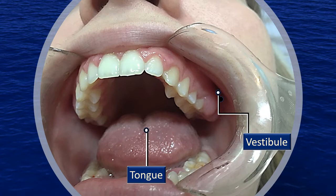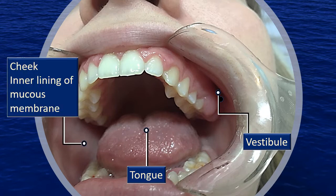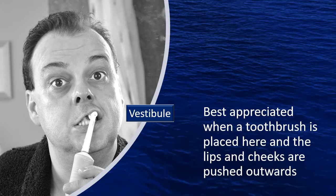For completion purposes: the tongue is very obvious, the floor of the mouth, and laterally the cheek, the skin of which we saw in the previous slide. The inner aspect has a mucous lining — stratified squamous non-keratinized epithelium. Here is a person with an electric toothbrush. The tip of the toothbrush is actually in the vestibule. He has moved the upper lip a little and you can see very clearly the location of the brush. The vestibule is best shown when the toothbrush is placed here — the lips and cheeks are pushed outwards.